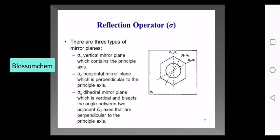Next is the reflection operator. What is the reflection operator? It is a mirror plane — also called the mirror plane operator or plane of symmetry. There are three types of mirror planes: sigma v, sigma h, and sigma d.